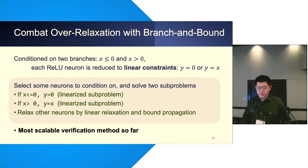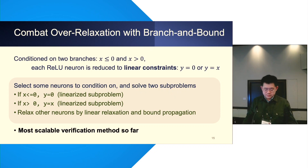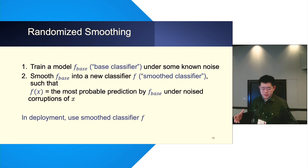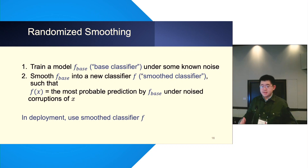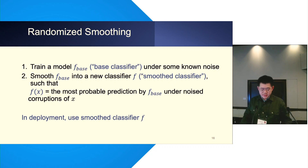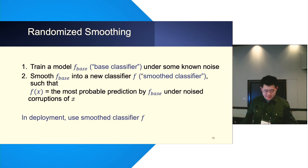Linear relaxation combined with branch and bound is the most scalable verification for generic neural networks so far. Another major thread of certification is called randomized smoothing. In randomized smoothing, we change the inference protocol of a model to make certification even more scalable. At a high level, we first train a base classifier under some noise — usually Gaussian — then we construct a smooth classifier F such that for any given input, F predicts the most probable label of the base classifier after noise is added to X.